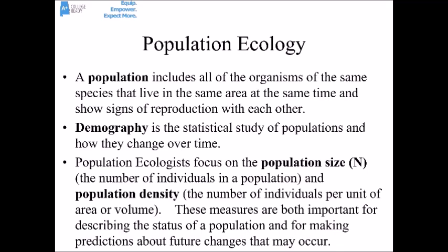A sort of subfield of population ecology is demography — the statistical study of populations and how those populations change over time. Population ecologists often focus on the size of the population, which is oftentimes abbreviated with a capital N, and the population density, which is the number of individuals per unit of area, or for an aquatic environment, the number of individuals per unit of volume. These are really important for describing the status of a population and for making predictions about how populations might change.